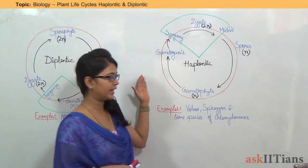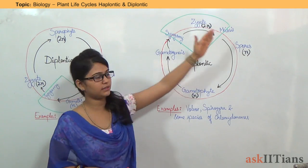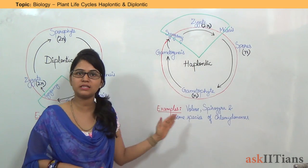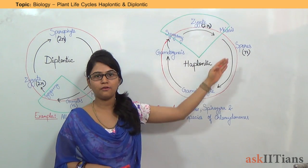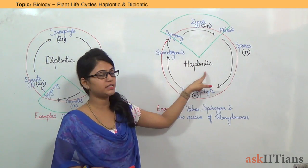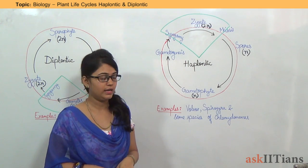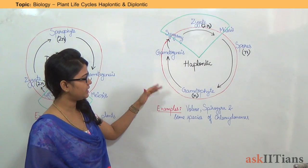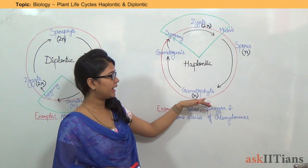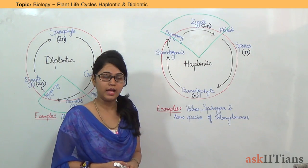You can see a diagram here. This is a diagram representing the life cycle of the haploid type in plants. Under this, you can see it starting with the gametophyte.